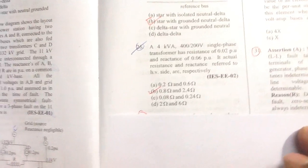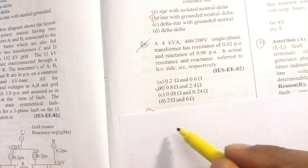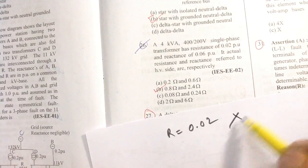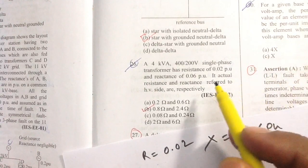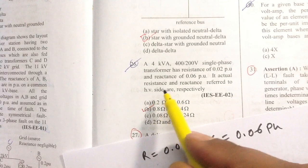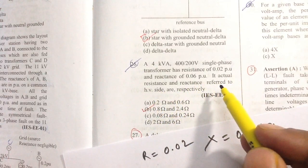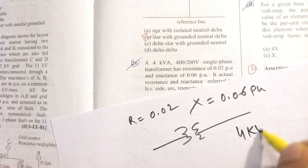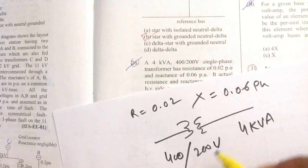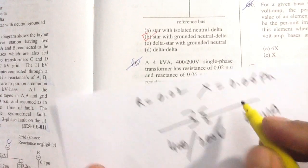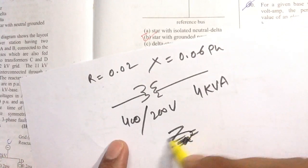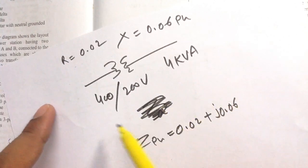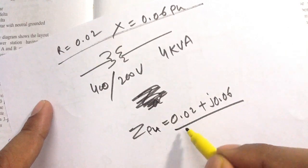Question number 26: a single-phase transformer rated 4 kVA, HV side 400 V, LV side 200 V has resistance 0.02 per unit and reactance 0.06 per unit. We need to find the actual resistance and reactance referred to the HV side. Per unit impedance is 0.02 + j0.06.